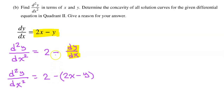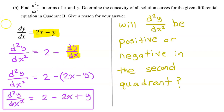Because we are subtracting a binomial, you have to put the binomial in parentheses until you do the distributive property with that negative sign. So we have now found the second derivative in terms of x and y.